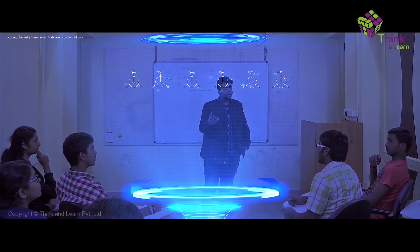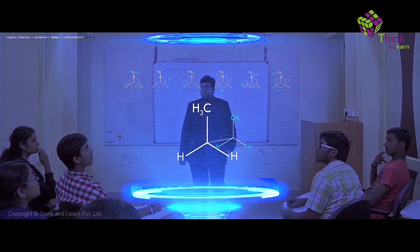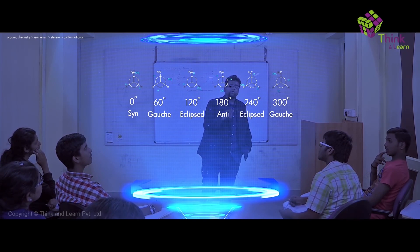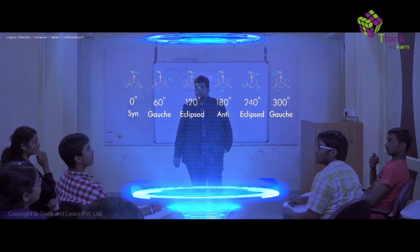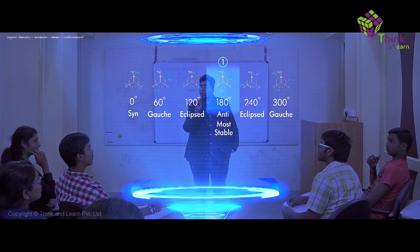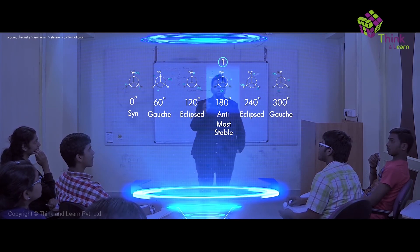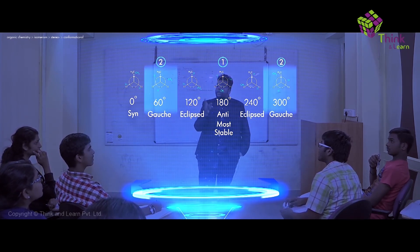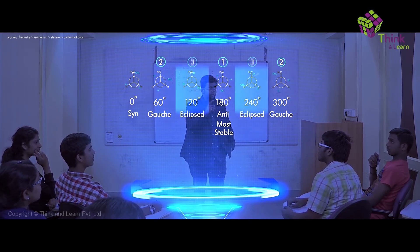If you want to see how it looks in the sawhorse projection, take a look — that is the sawhorse projection for butane. Out of all these conformations, the most stable is the anti conformation, because the angle is 180 degrees and CH3 is completely opposite to the other CH3. After anti, the next most stable is gauche, followed by the eclipsed conformation, which is not the fully eclipsed one.